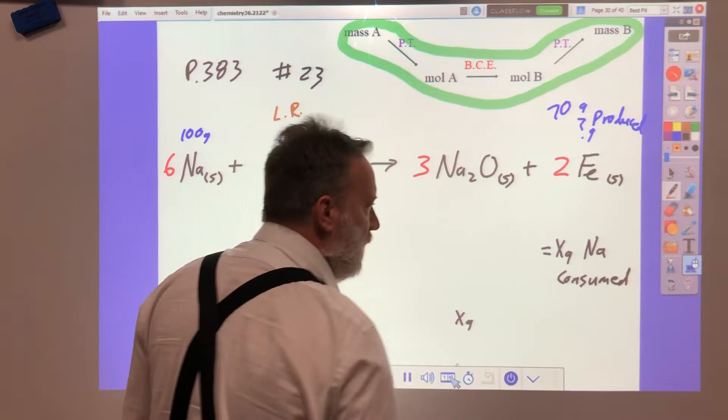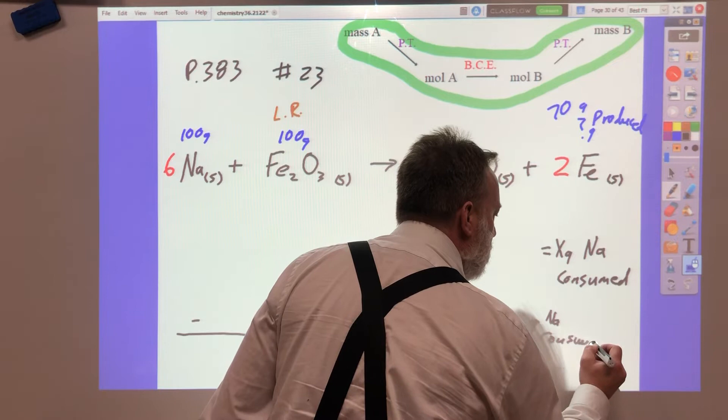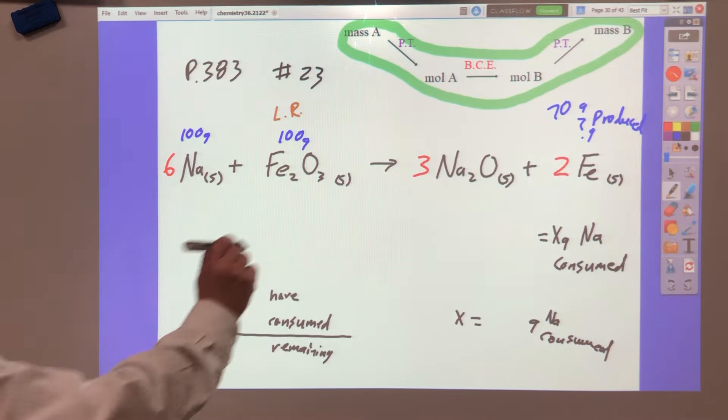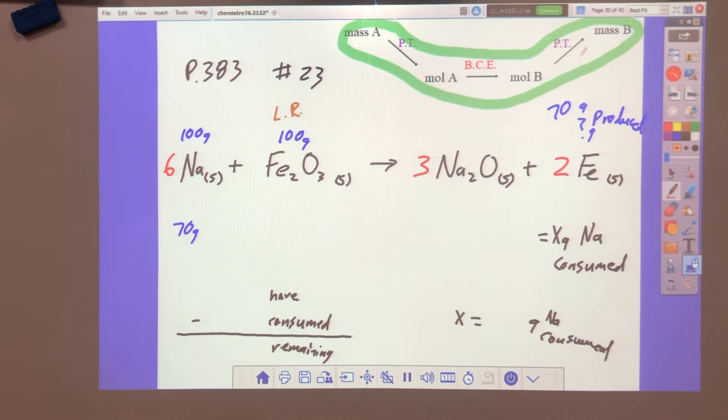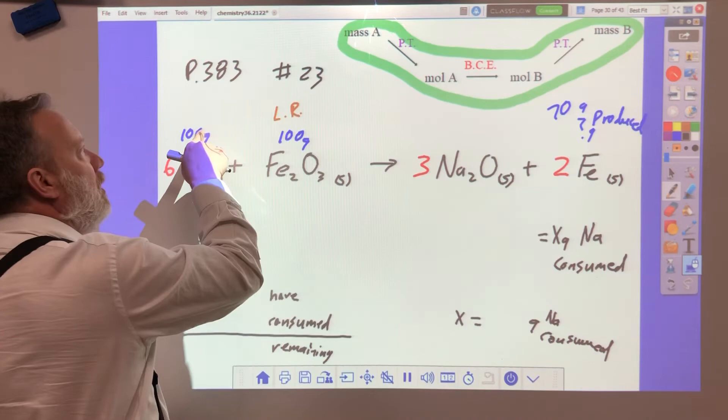In the meantime, this is x equals grams sodium consumed. That number will go here. If I can, I'm going to move this up a smidge so it's where I want it. So we're going to start with, this time, 70 grams Fe produced over one.